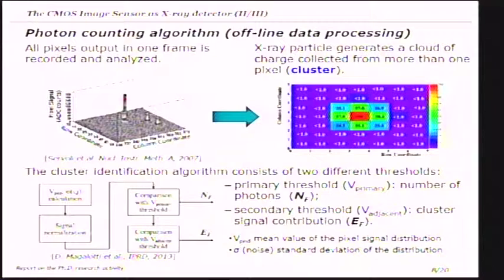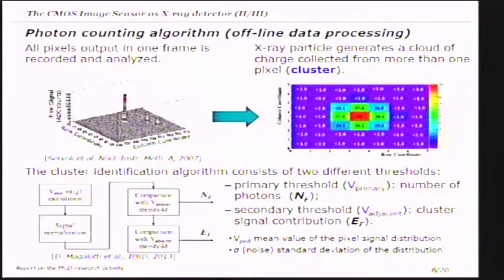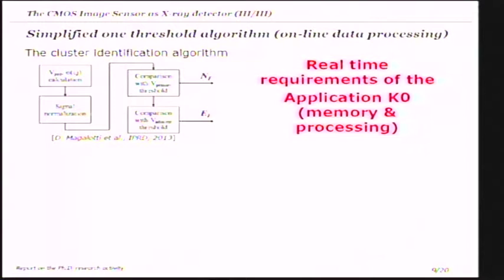A cluster identification algorithm has been considered to find the observables correlated to the dosimetric quantities. This cluster algorithm consists of the following steps: first we evaluate the pedestal and the noise distribution of all pixels in the sensor frame, then we normalize each pixel and compare it with a primary threshold to identify the number of photons in a frame, and with a secondary threshold to identify the cluster signal contribution. These two observables are correlated to photon energy and absorbed dose. However, implementing this algorithm in a modern programmable device requires a lot of memory resources to store all pedestal and noise values for each pixel, and a lot of digital processing resources to implement the divider operation for the normalization.